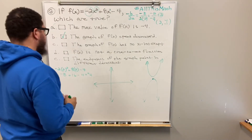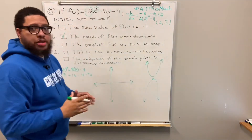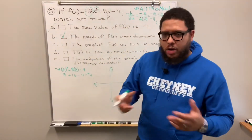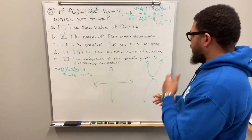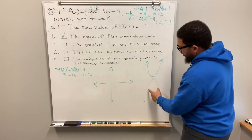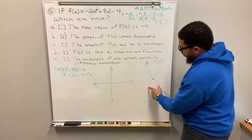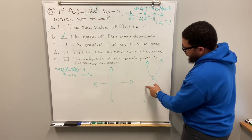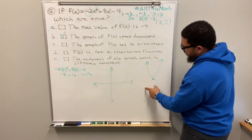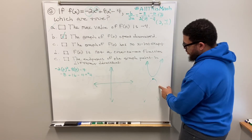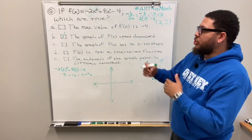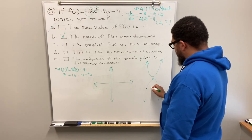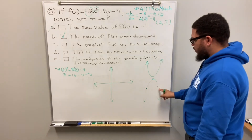Now let's look at choice D: f of x is not a one-to-one function. That is true. A one-to-one function means every x-value matches up with exactly one y-value and vice versa. But on a downward-opening parabola, a single y-value matches up with two different x-values, so it is not a one-to-one function — choice D is correct.